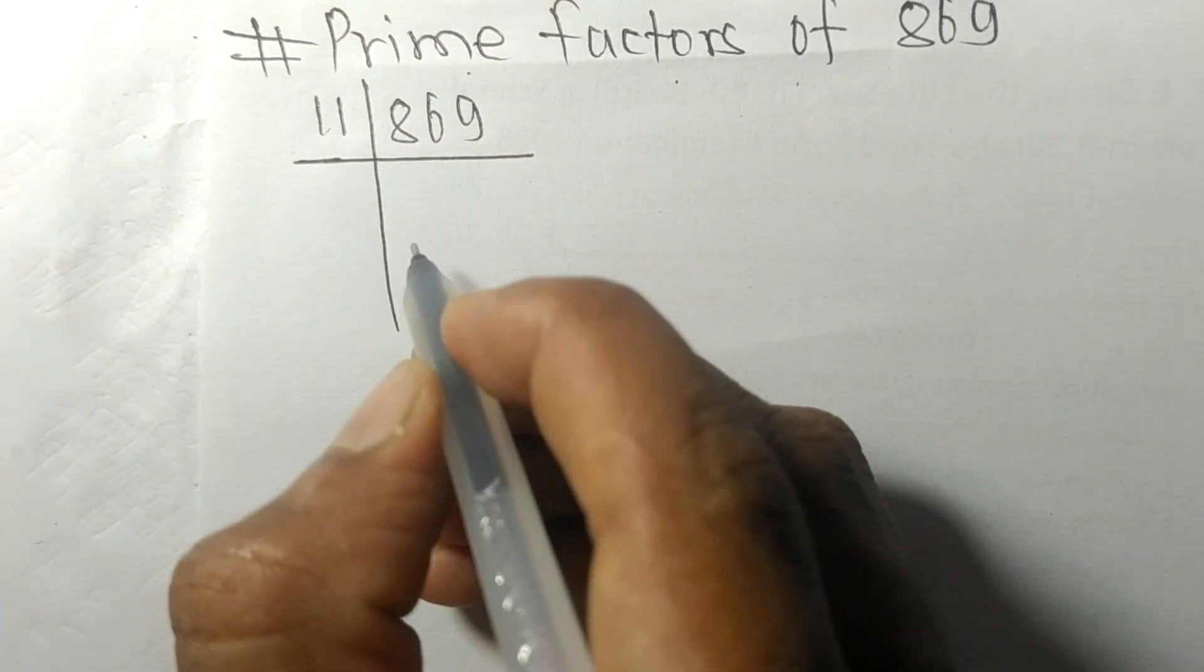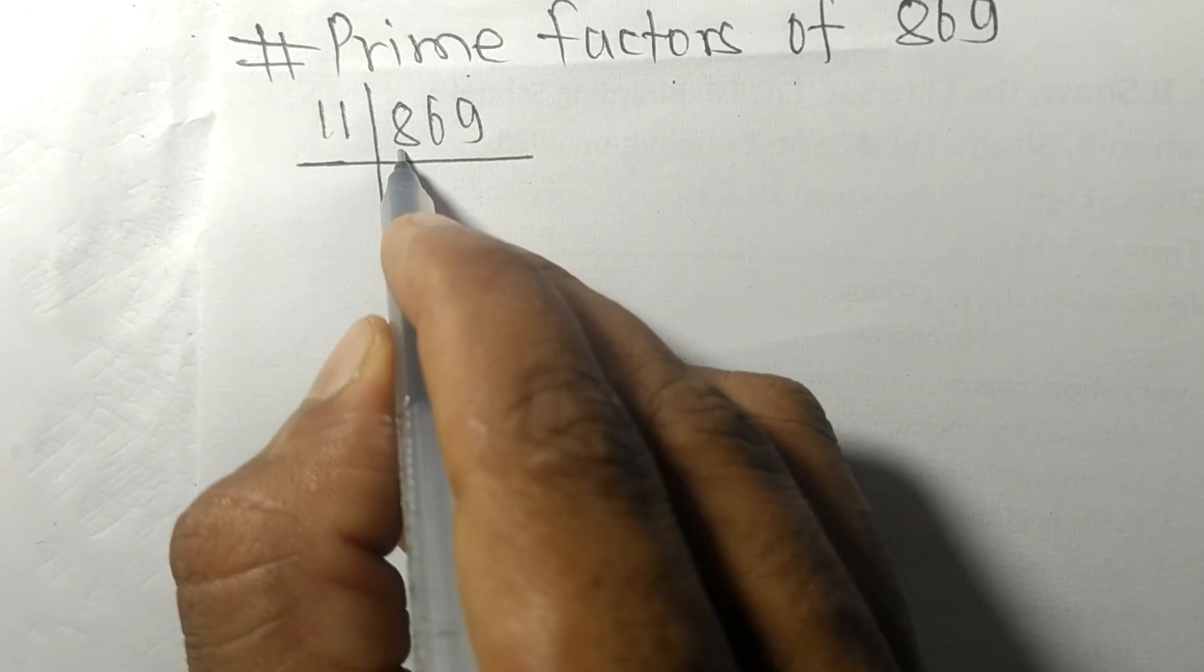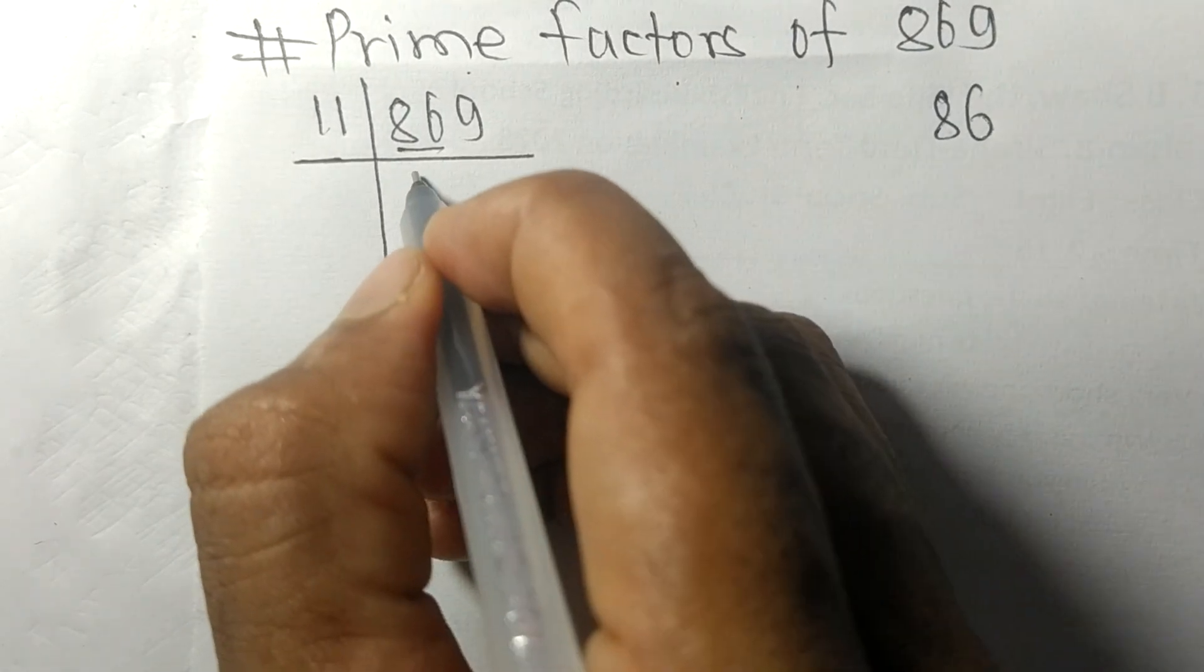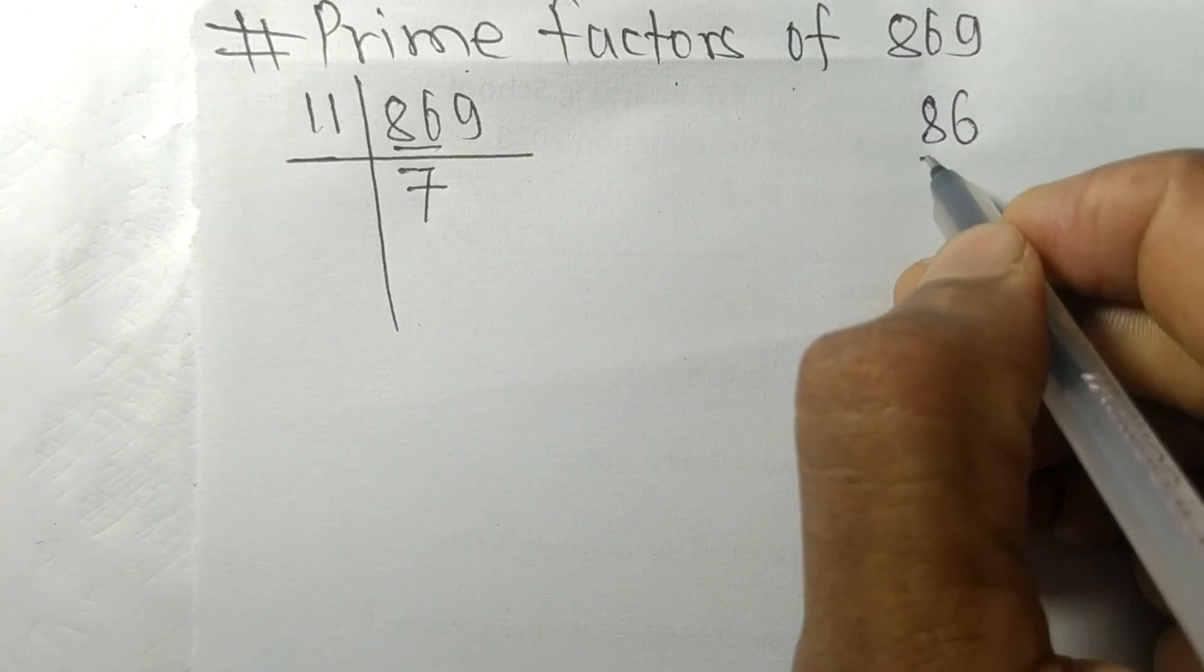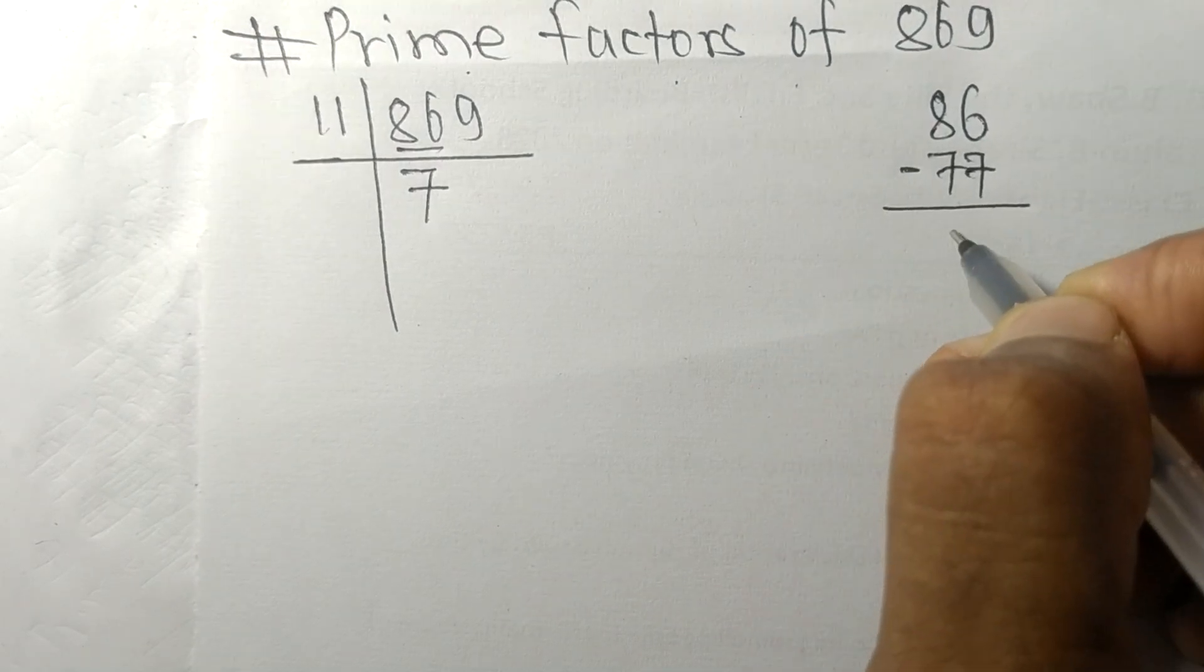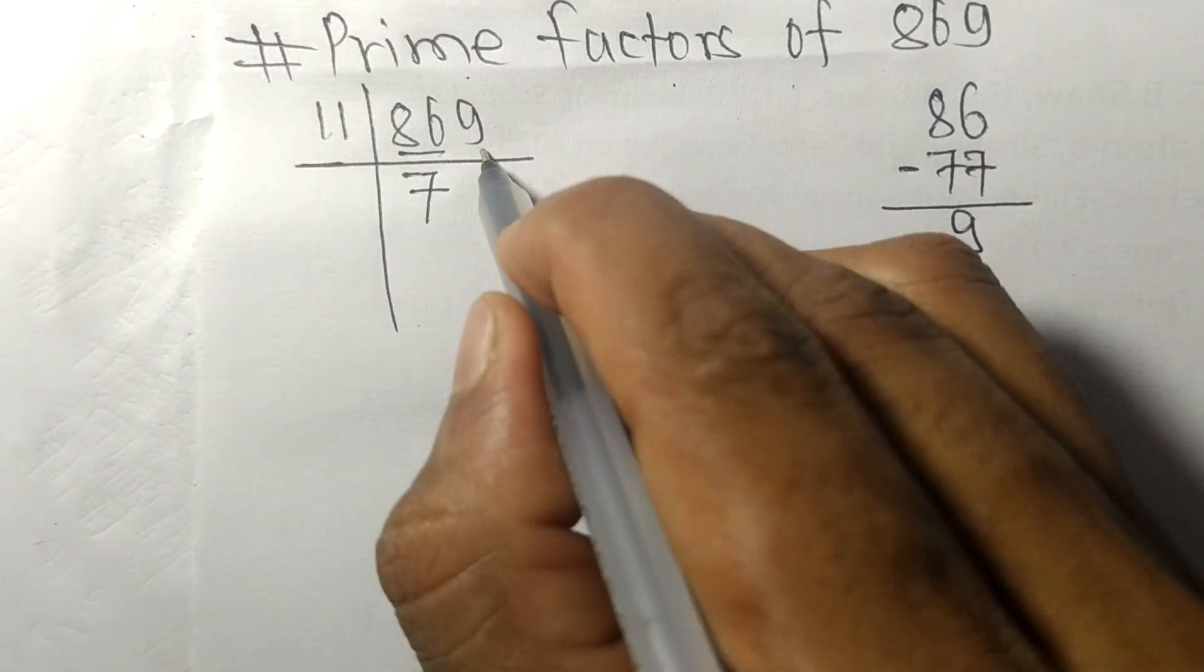by 11. So first we have 86. 11 times 7 means 77. On subtracting we get 9, and this 9